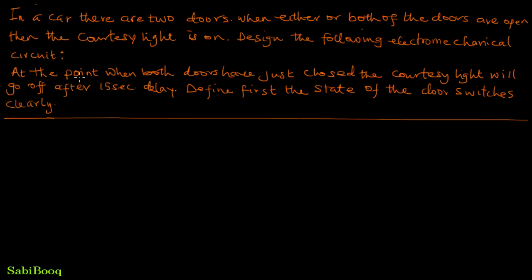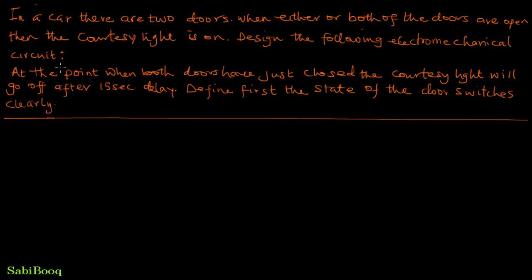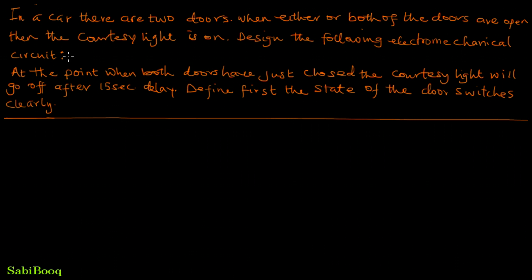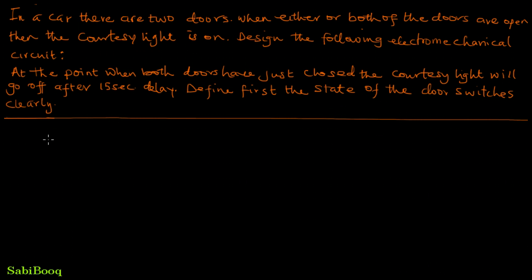Have you ever wondered why in a car, when the doors are opened, the lights inside the car come on? That's called the courtesy light — the lights that illuminate the inside of the car so that you can see around the inside. But when the doors are closed, the lights go off, though they do this after a 15-second delay, or depending on the car, could be 10 or even 20 seconds. Today we are going to show how engineers designed this.